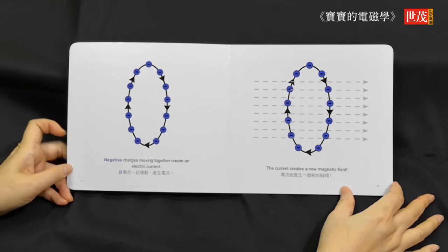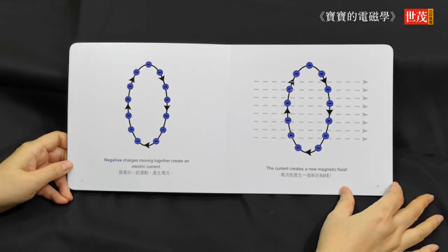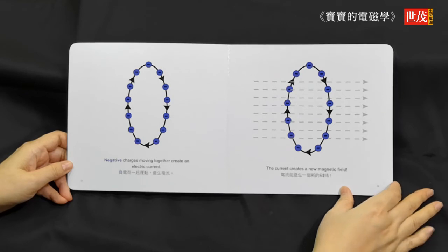Negative charges moving together create an electric current. This current creates a new magnetic field.